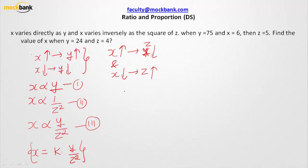Now the problem says that when y is 75 and x is 6, z is 25. So the value of every variable is given - x is given, y is given, and z is given. Can we find out what is our proportionality constant value? Let us find it out.